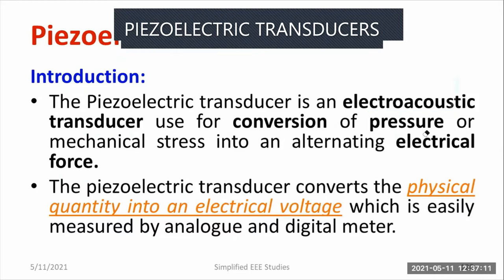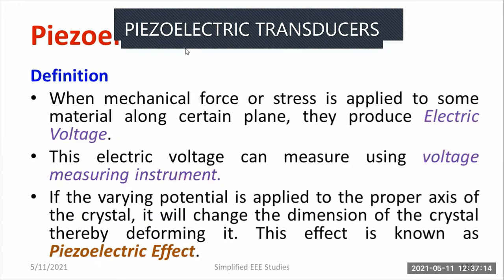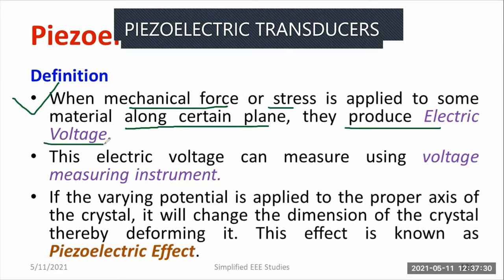Moving on to the definition: when mechanical force or stress is applied to some piezoelectric material or piezoelectric crystal along a certain plane, they produce electric voltage. You need to apply the non-electrical quantity such as mechanical force or stress in a particular axis of the material. That material has a special property — it is not like a common material. Then that material is able to produce electric voltage, which can be measured using voltage measuring instruments, either analog or digital.